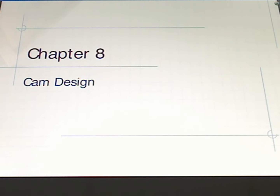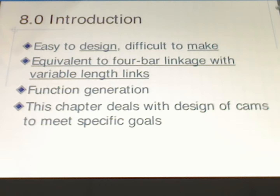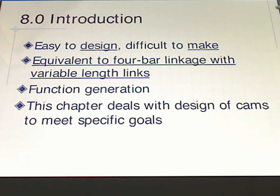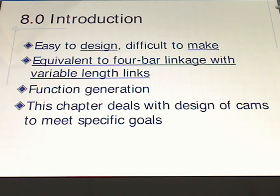Today we're going to focus on cam design. Cams are not so bad to design, however they can be difficult to make. The cam is equivalent to a four-bar linkage where the links are able to change length, so it's equivalent to a four-bar linkage with variable length links. It's an example of function generation, which you may recall from the previous chapter. In this chapter, chapter 8, we're going to deal with the design of cams to meet specific goals.